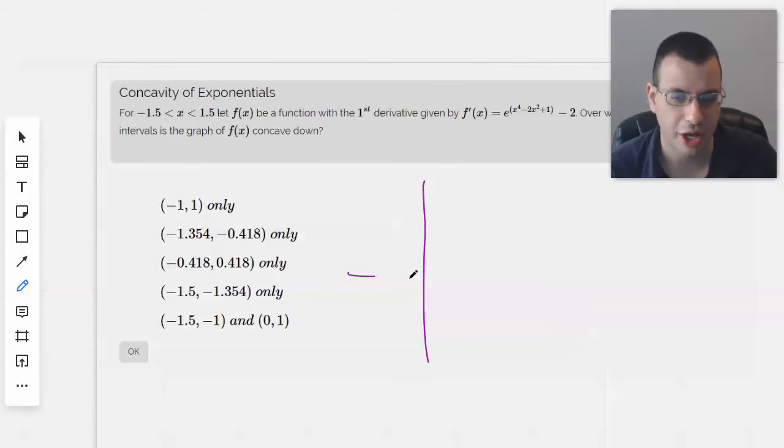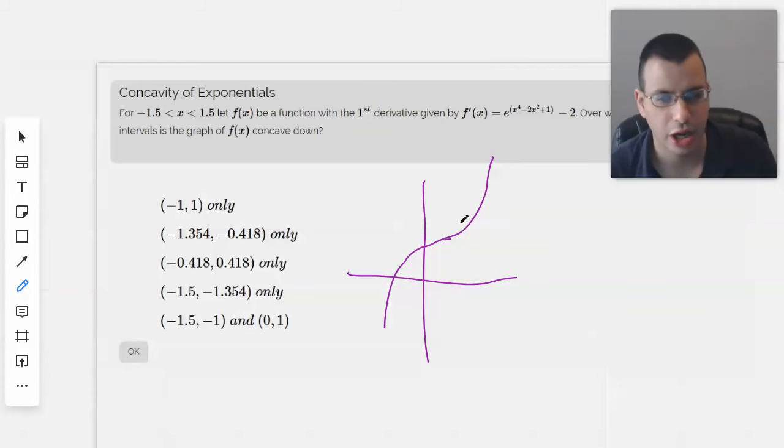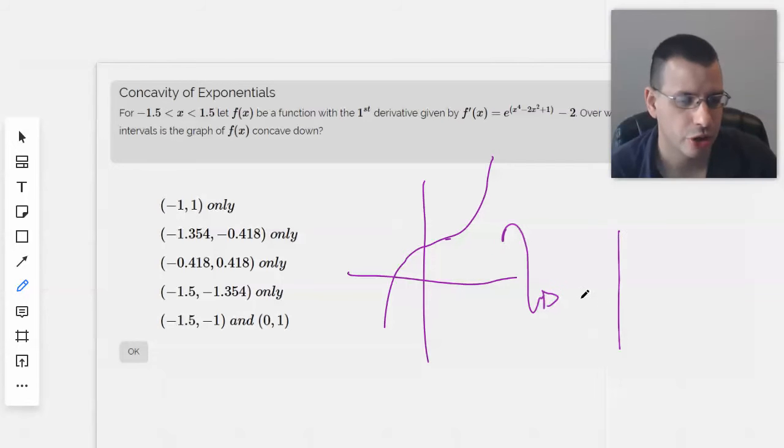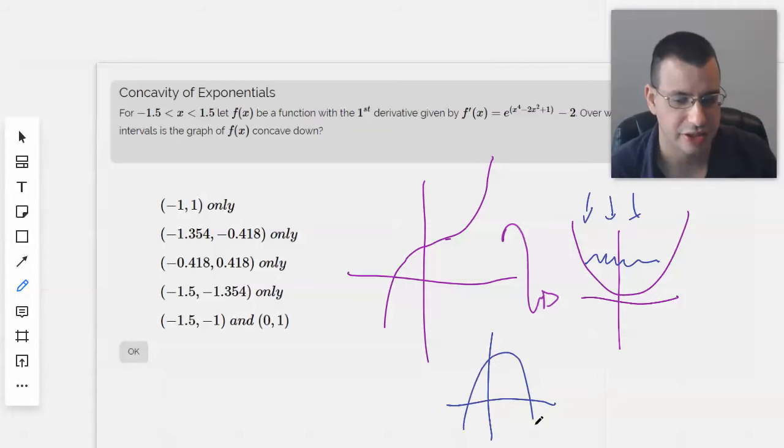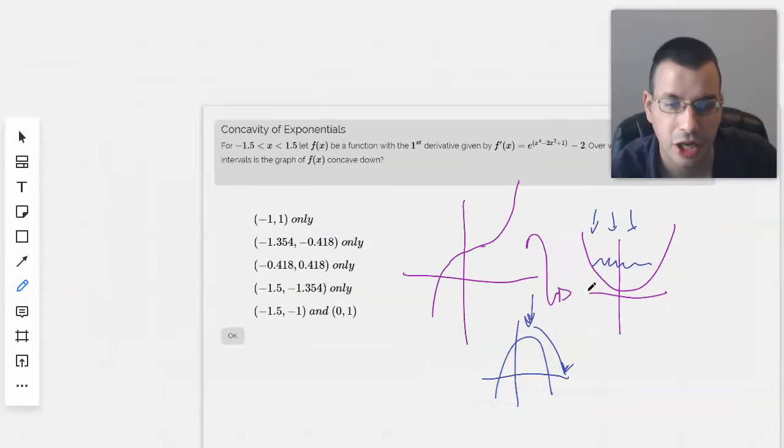For those unfamiliar with concavity, something like this would be concave up. The mnemonic I use is if it can hold water - rain comes down this way, water collects in the bottom. Negative concavity would be something like this where rain comes down, flows off the edge, does not hold water. This would be concave down, this one would be concave up.